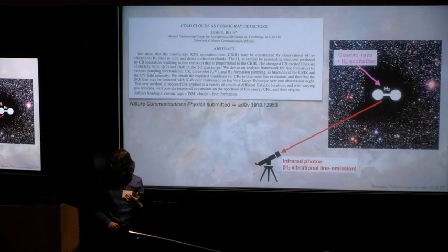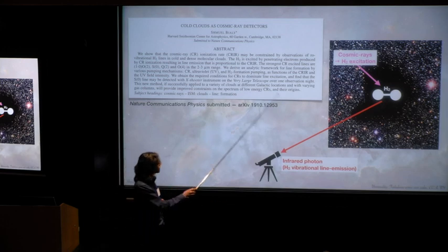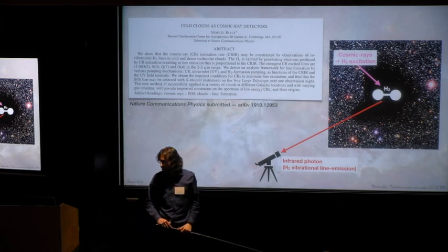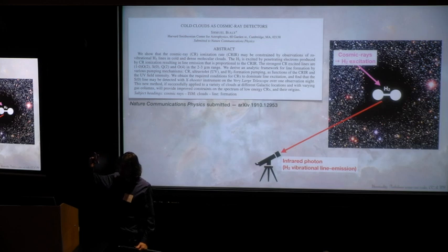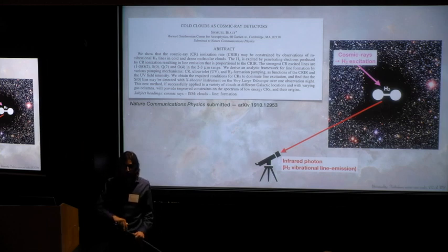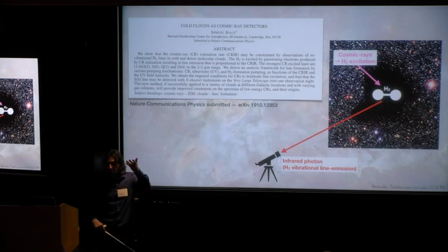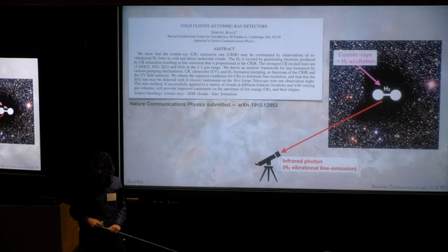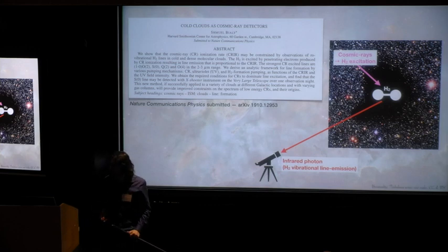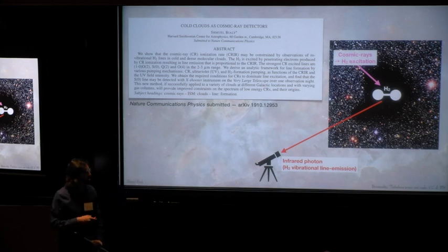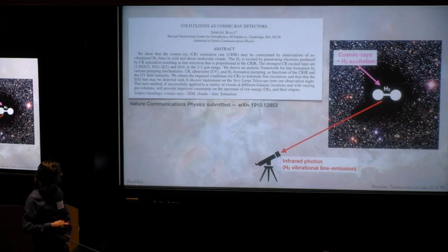Recently, I proposed such a new method, still to be explored in observations, and the idea is to use H2, molecular hydrogen, which is the main constituent of the gas in molecular clouds, as a probe of cosmic rays. The idea is cosmic rays come, hit an H2 molecule, excite it, then the H2 molecule, when it relaxes to the ground state, emits a photon, a vibrational line in the infrared. And if we observe this photon, we can constrain the excitation rate, which is the cosmic ray ionization rate. So this might be a new method to constrain the cosmic ray ionization rate in the galaxy, in molecular clouds.